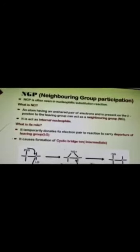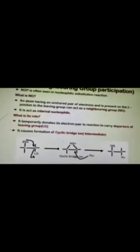What is the role of neighboring group? The most important role of neighboring group is to depart the leaving group and to give the formation of cyclic bridge ion.